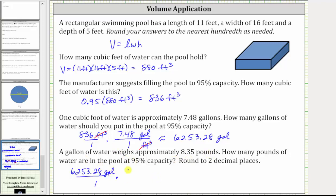We want gallons to simplify out, which means we have to have gallons in the denominator and pounds in the numerator. And since one gallon is approximately 8.35 pounds, the unit fraction is 8.35 pounds over one gallon.